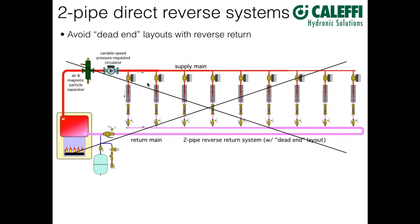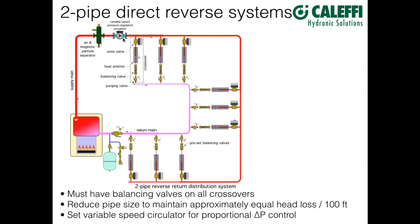Something to avoid is a dead-end reverse return. The first crossover on supply is the last on return, but the return has to go all the way out to the end, make a U-turn, and come back. The problem isn't that it doesn't work — it's that it adds significantly to piping cost because you need the largest piping size all the way from the far dead-end back through your heat source. Stay away from dead-end layouts. The best layouts involve making a loop — typically around the perimeter of the building.